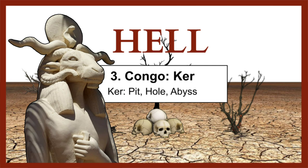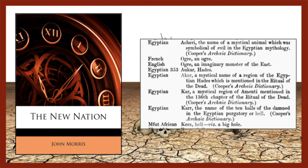To bring it full circle: in the Congo region of central Africa, 'ker' — K-E-R or K-A-R — means pit, hole, abyss, or even the void, which translates naturally to the underworld. References list 'Akar' as Hades, 'Kar' as the name of the ten halls of the damned in the Egyptian purgatory or hell. Among the Mbuti people — the pygmy or Twa Africans — 'kara' means hell, specifically a big hole. Following that line of etymology, the earliest form of this word hell is 'kara,' representing a pit, a big hole, or the abyss.